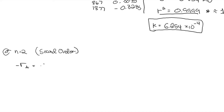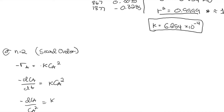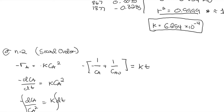For second order reaction, negative rA equals k times CA squared. So negative dCA over dT equals k times CA squared. Separating variables and transposing CA squared and dT, we get negative dCA over CA squared equals k dT. Integrating both sides gives negative 1 over CA plus 1 over CA0 equals kT.